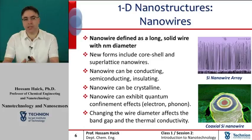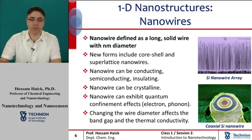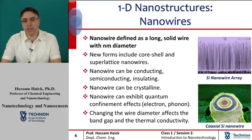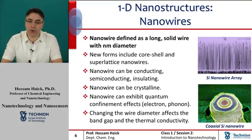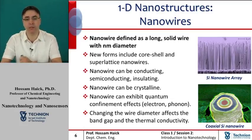At these scales, quantum mechanical effects are important, and therefore they are given the term quantum wires. Many different types of nanowires exist. These include metallic nanowires, semiconducting nanowires, and insulating nanowires. More details about each of these nanowires can be seen on the slide, and we will explain about these in the next lectures.